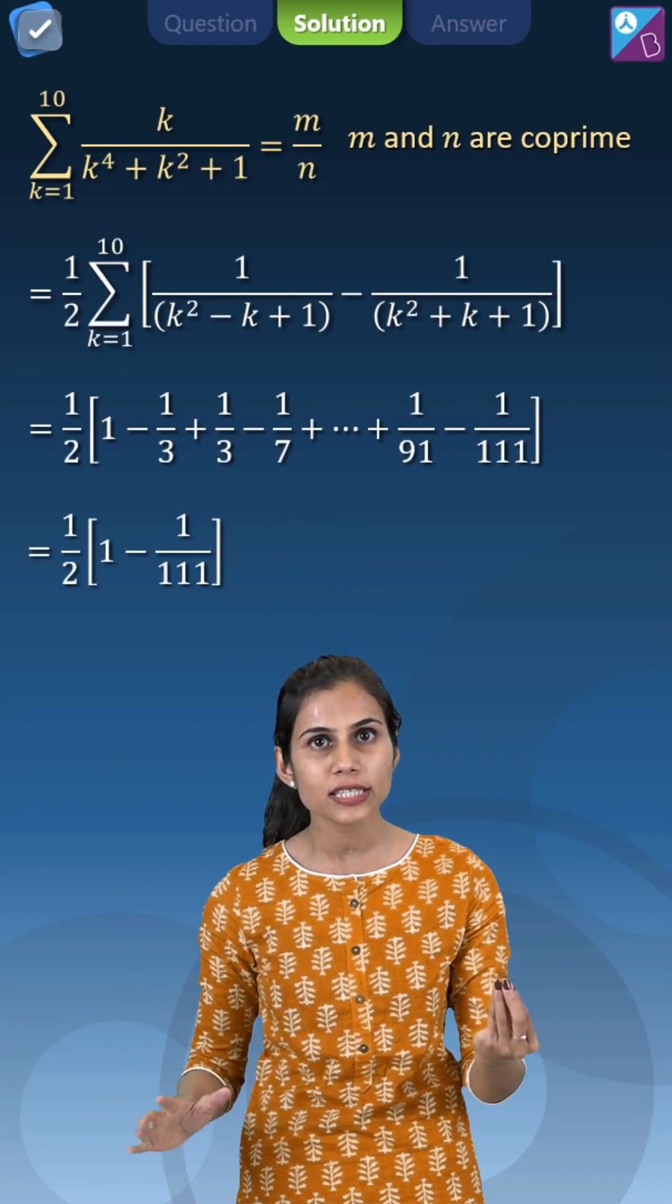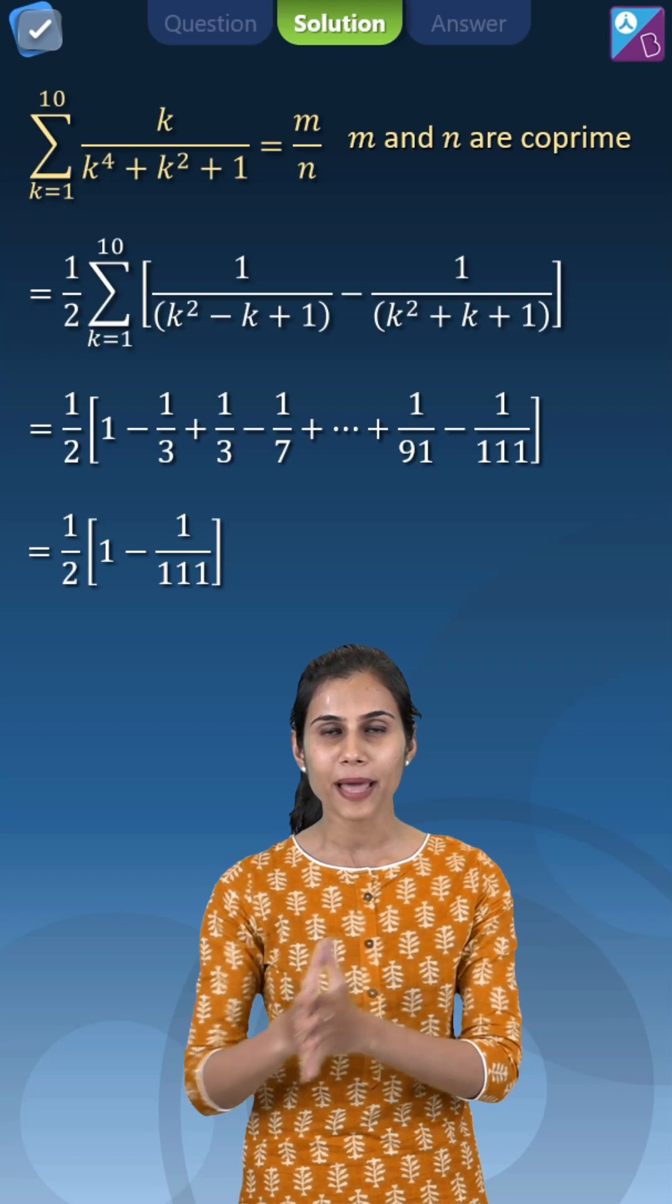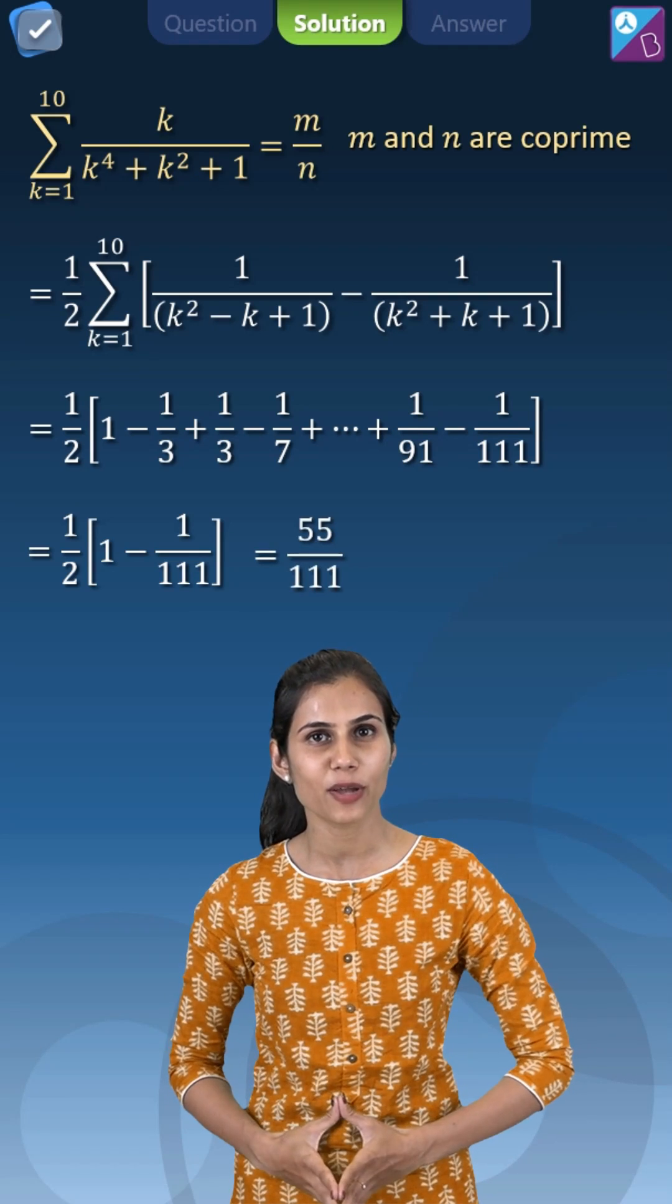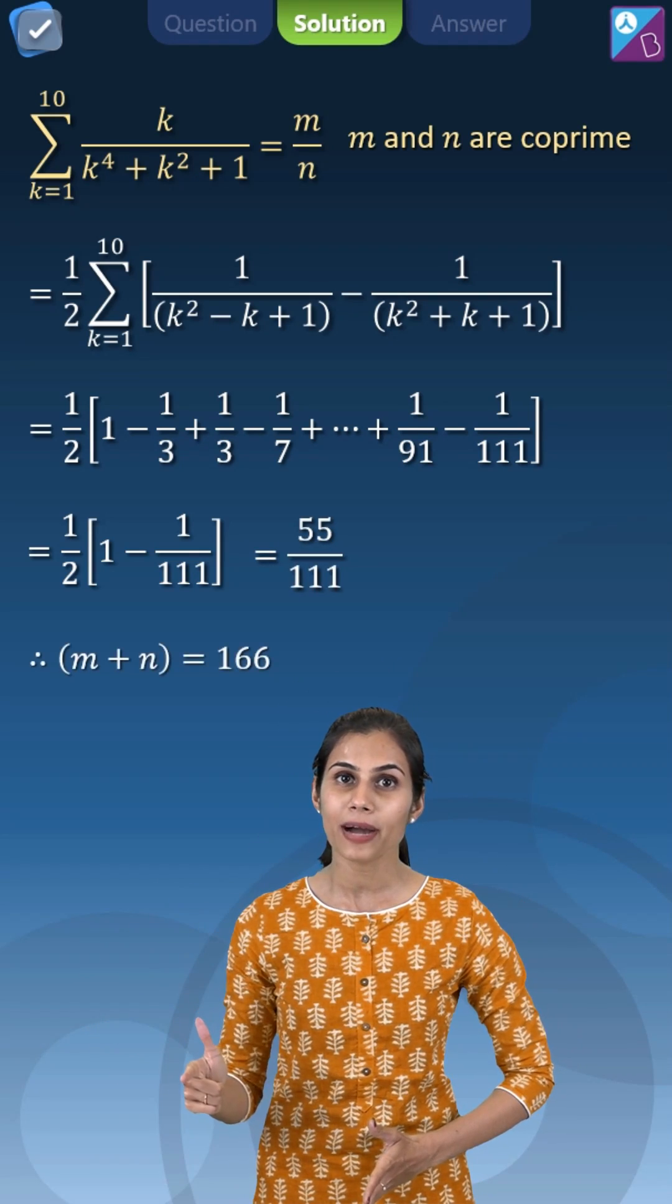All you'll be left with is just the first term and the very last term and that eventually will give you the answer as 55 by 111. Compare it with m by n and you have 166 as your final answer.